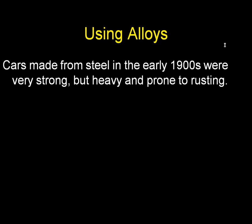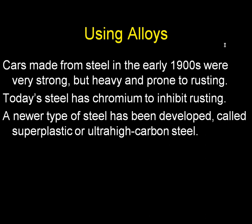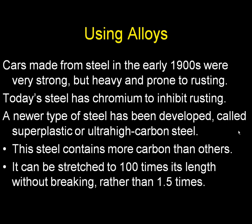Alloys are useful for making cars. Originally we made cars from steel, but they were heavy and prone to rust. Today's steel has chromium added to inhibit rusting. There's also a newer type called superplastic, or ultra-high carbon steel, which contains more carbon — it can be stretched to 100 times its length without breaking, rather than one and a half times like previous forms of steel.